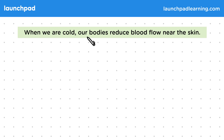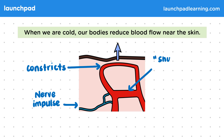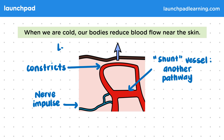When we're cold, our bodies reduce blood flow near the skin. You might have noticed that when you're cold, your blood vessels become less visible and the skin becomes paler. This is because a nerve impulse from the brain causes a blood vessel near the skin to constrict. Shunt vessels will widen to provide another pathway for this blood. As a result, there's less heat loss from the skin overall.